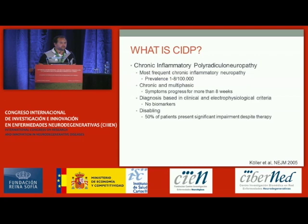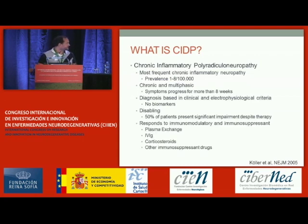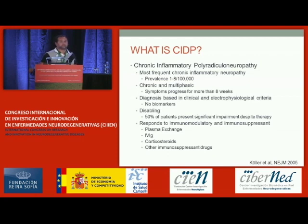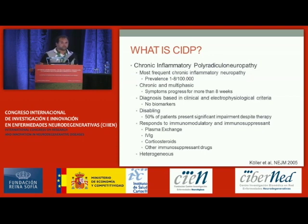It's pretty disabling despite there being treatment for this disease. Fifty percent of patients remain with significant disability even with treatment. It responds to immunomodulatory therapy, in particular to plasma exchange, intravenous immunoglobulins, and steroids. And it's a very heterogeneous disease.